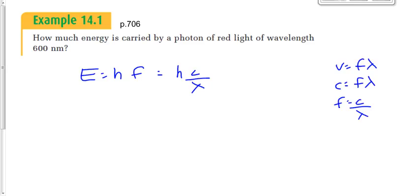We could replace F with C over lambda. We don't like deriving an equation like that every time. Good news is both of these forms of the equation appear on your data sheet. E is equal to HF. Planck's constant times the frequency, but also Planck's constant times the speed of light divided by the wavelength. We're going to use the last part of it.